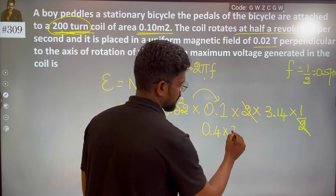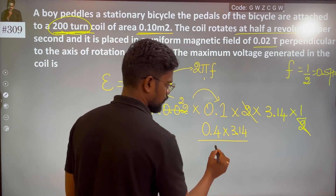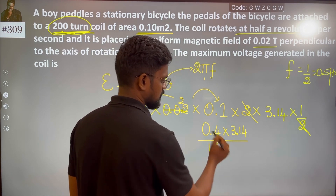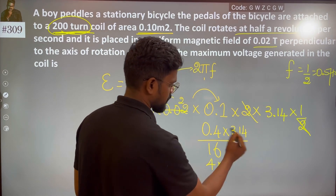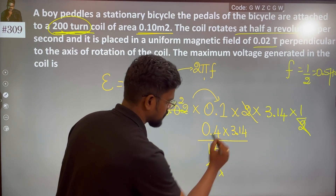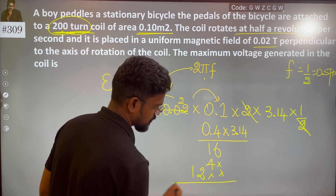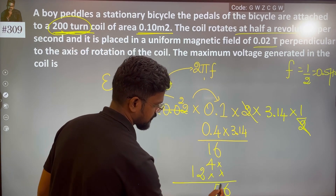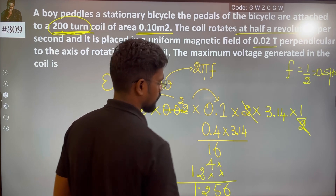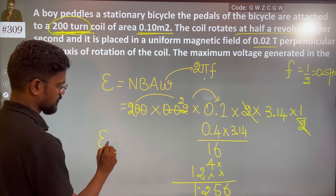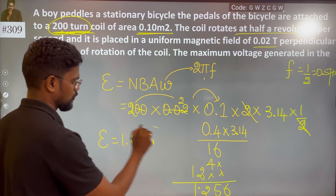0.4 multiplied by 3.14. 4 fours are 16, and this becomes 12 volts after intermediate steps. Working through: 1.2, so your EMF is nothing but 1.256 volts.